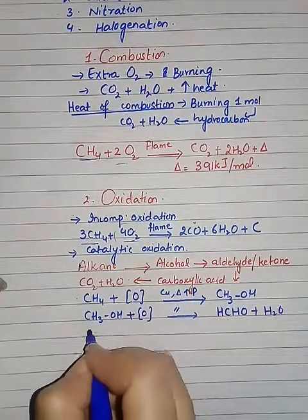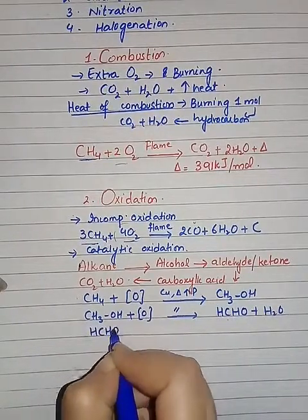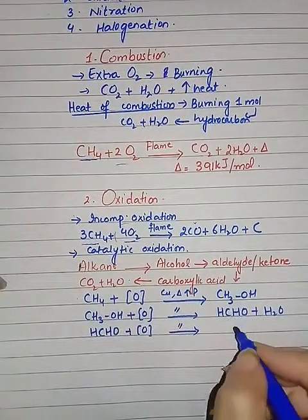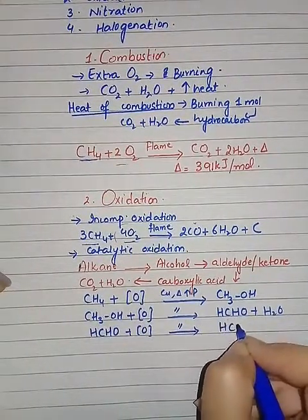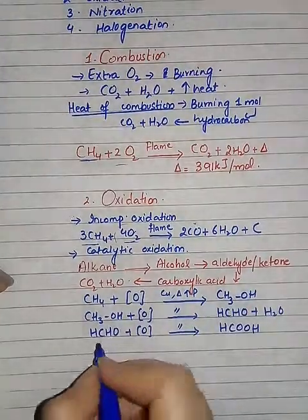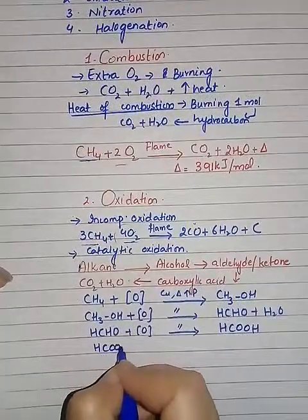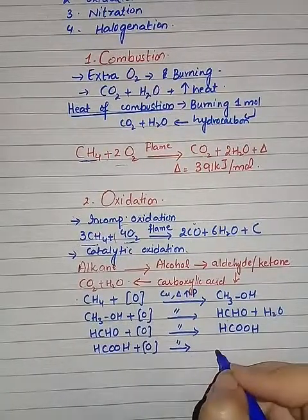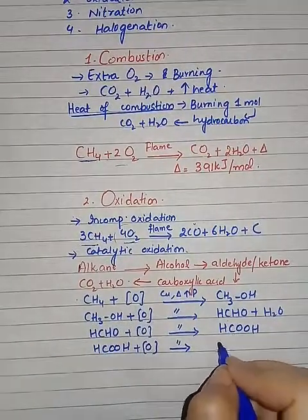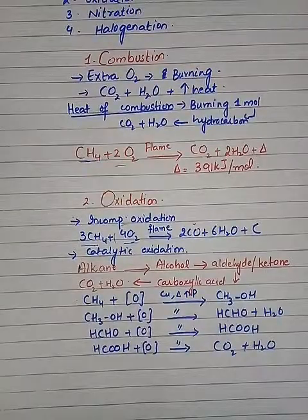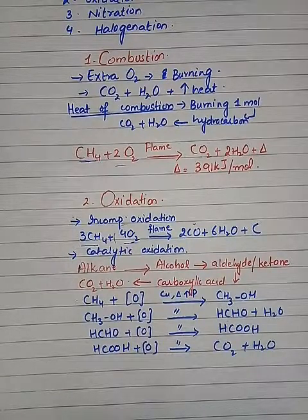The aldehyde formed is formaldehyde. Taking formaldehyde again with oxygen under similar conditions gives a carboxylic acid — this is formic acid, the simplest carboxylic acid. Upon further oxidation, it yields carbon dioxide and water. This is all about the combustion and oxidation of alkanes. Next we will see nitration as well as halogenation.